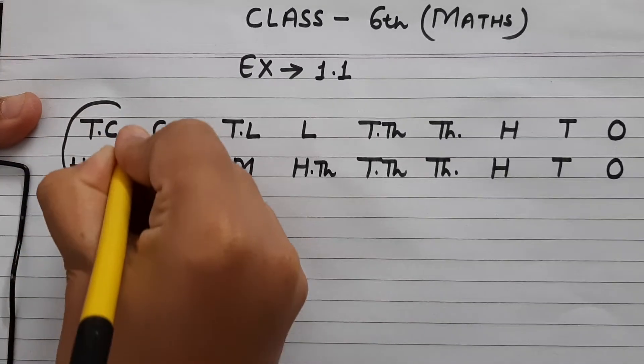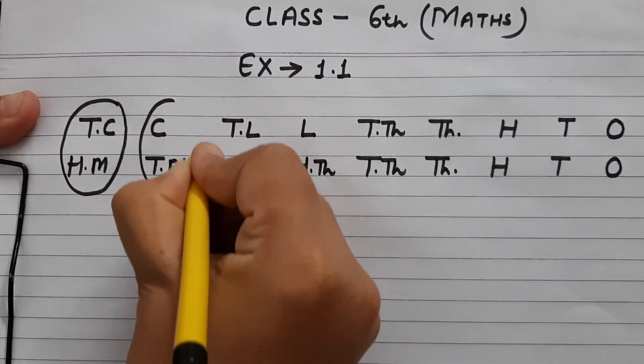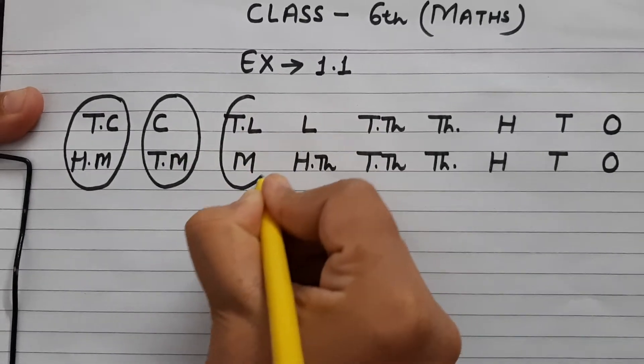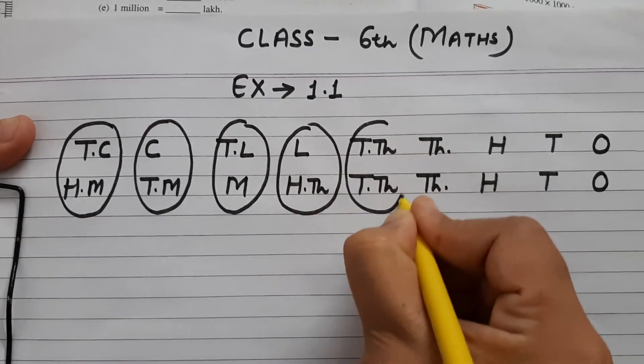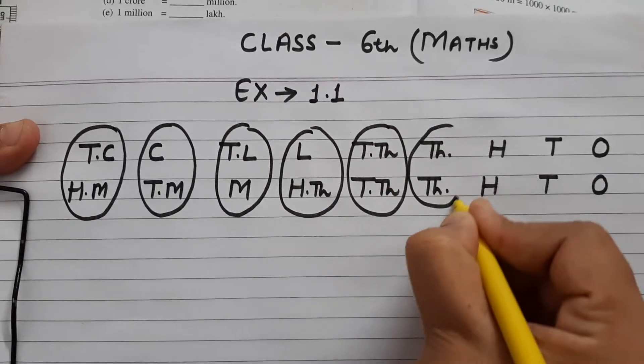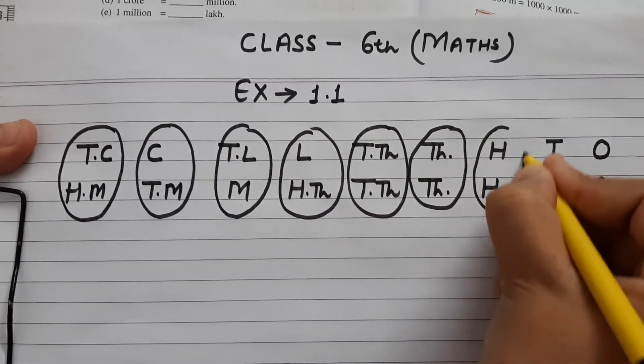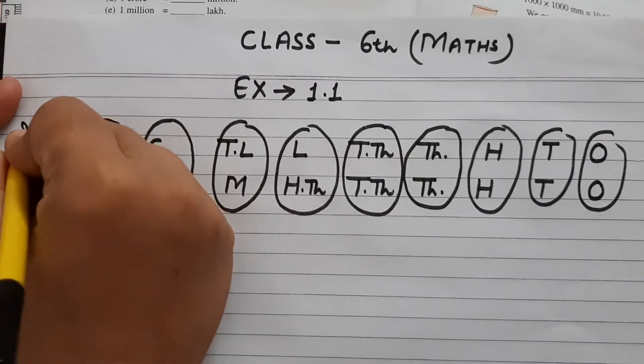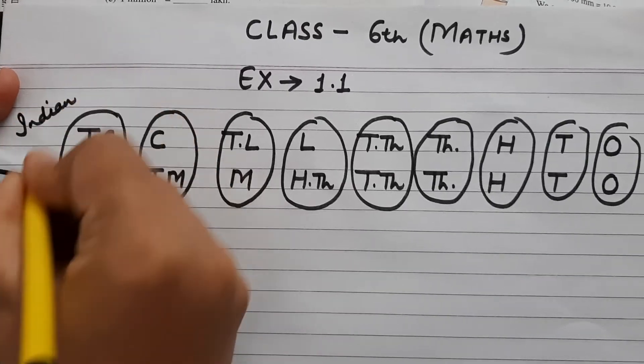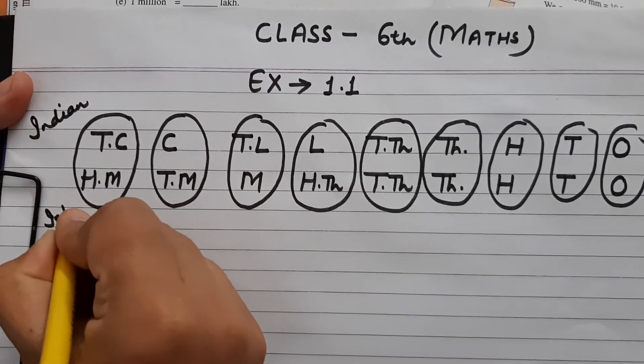और इनकी मैं grouping कर दूँगे. ये method बहुत ही आसान है, जरूरी नहीं कि इन sums के लिए, आप किसी और sum के लिए भी इसको बड़ी आसानी से use कर सकते हैं, और ये आपको कभी भी भूलेगा नहीं. तो ऊपर आपका था Indian system, और नीचे था आपका international system.